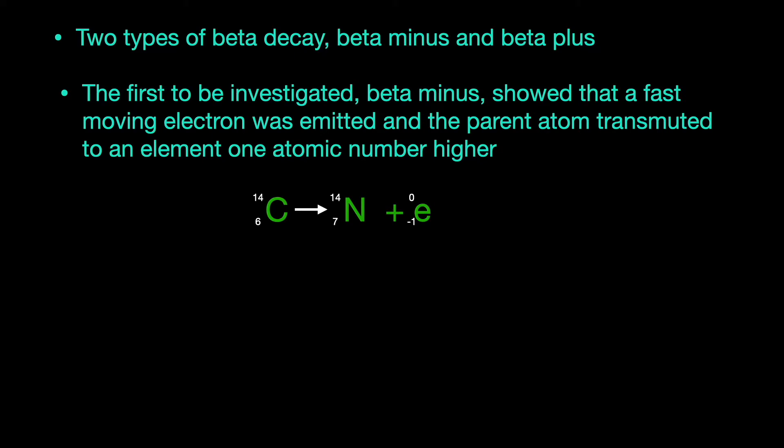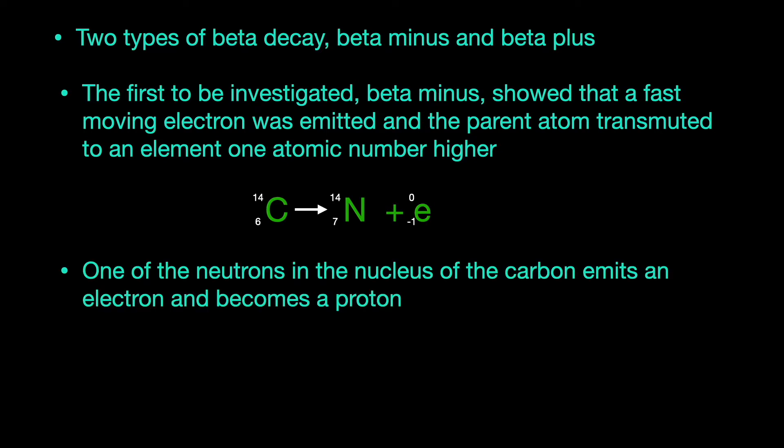When a beta particle is emitted, the carbon becomes nitrogen with the same atomic mass but an increased atomic number. What has happened is that a neutron in the nucleus has split, emitting an electron and leaving a proton.